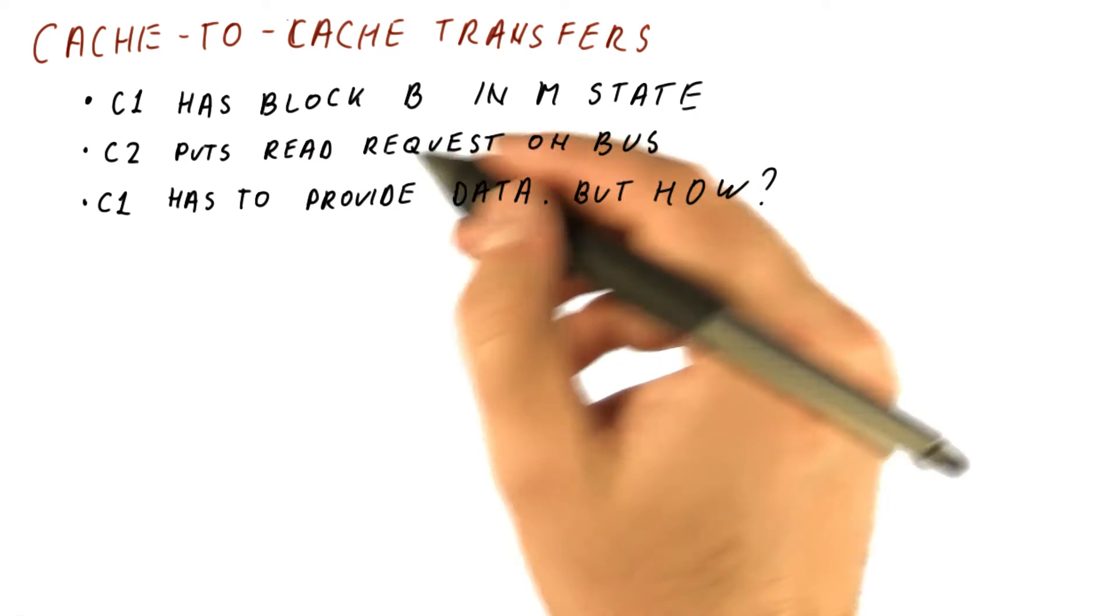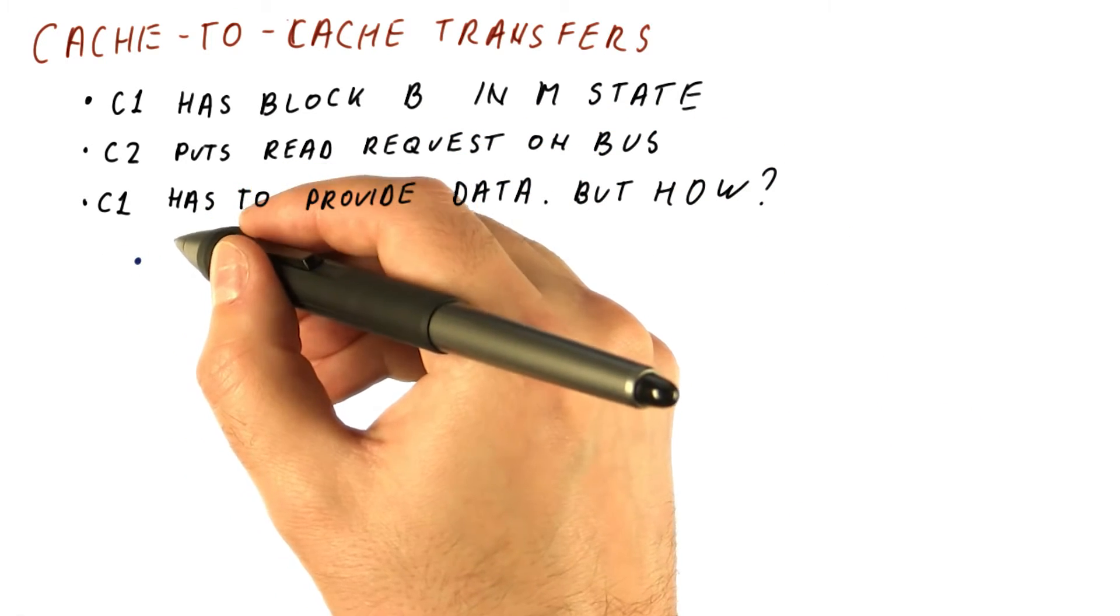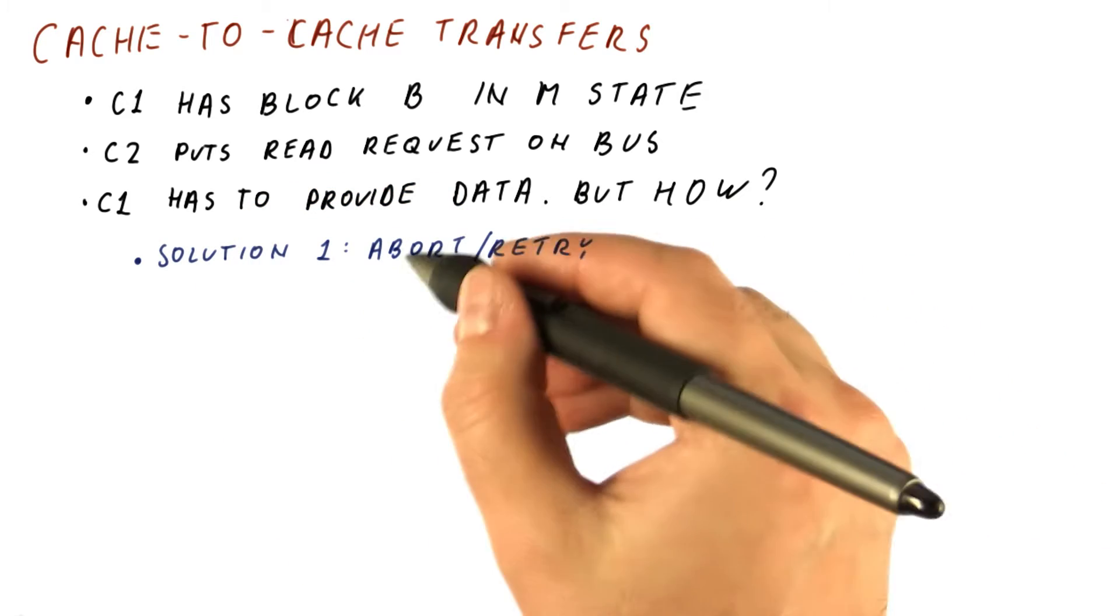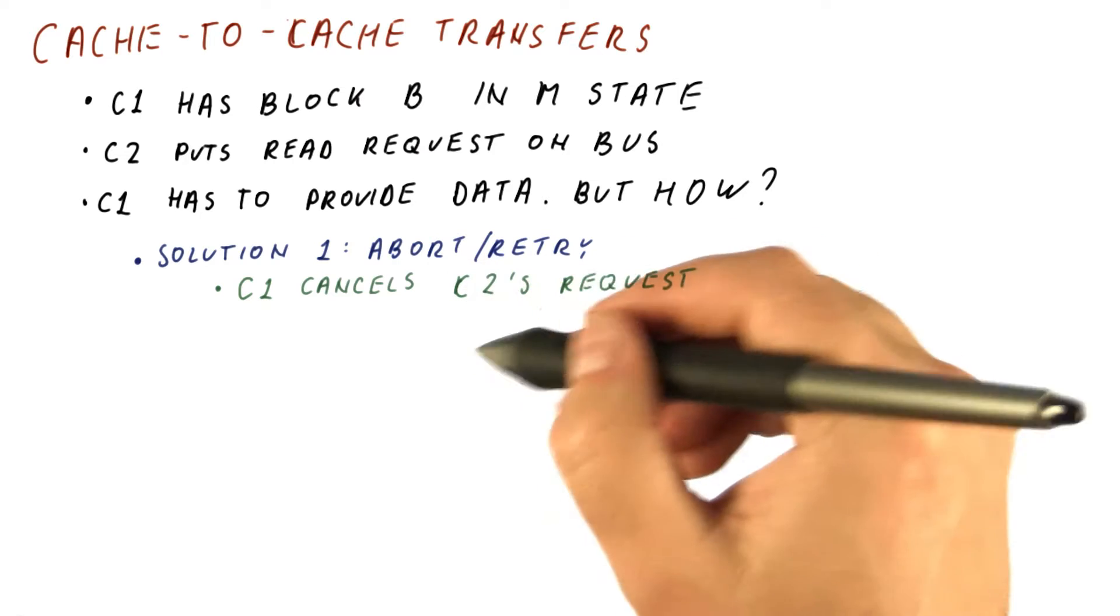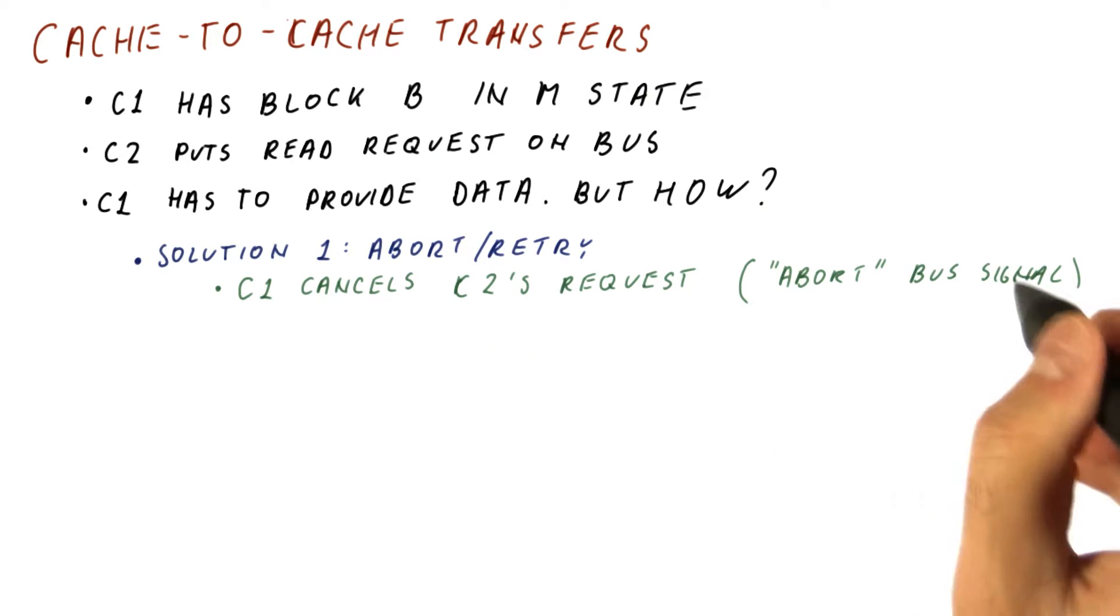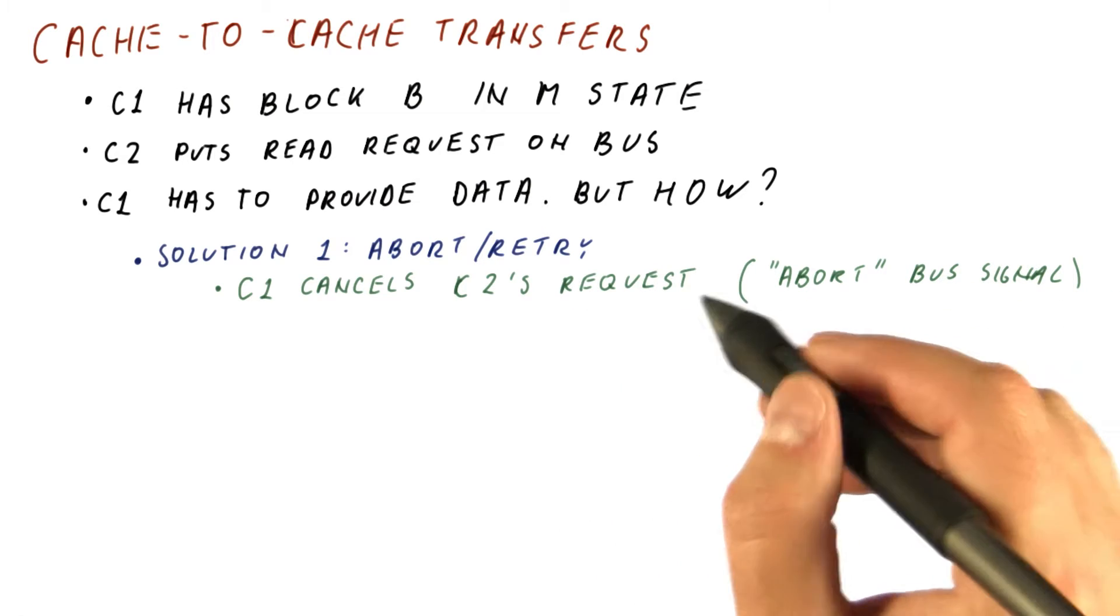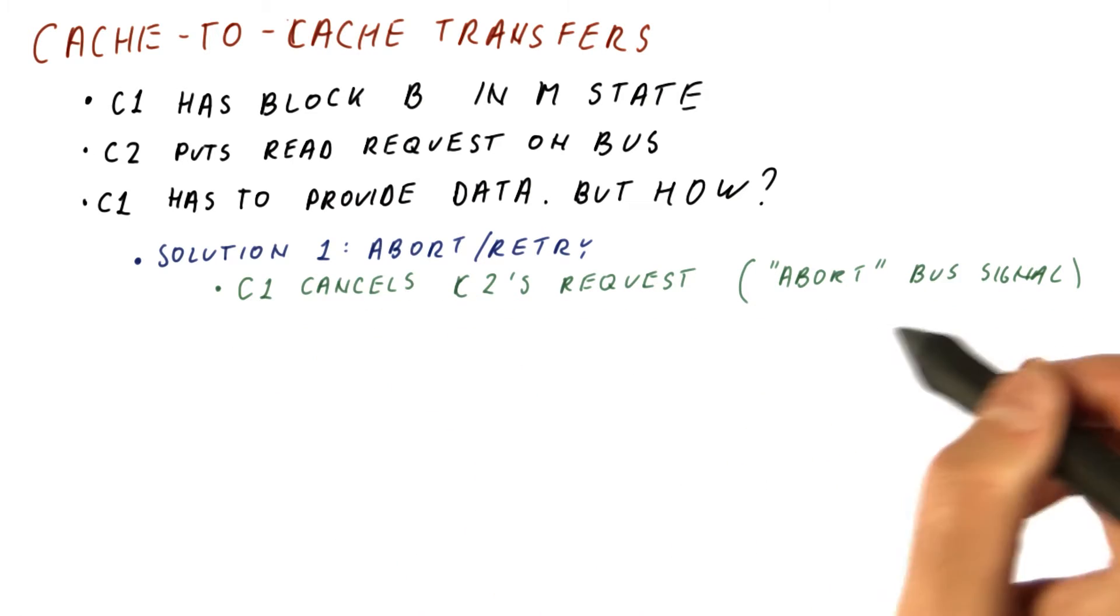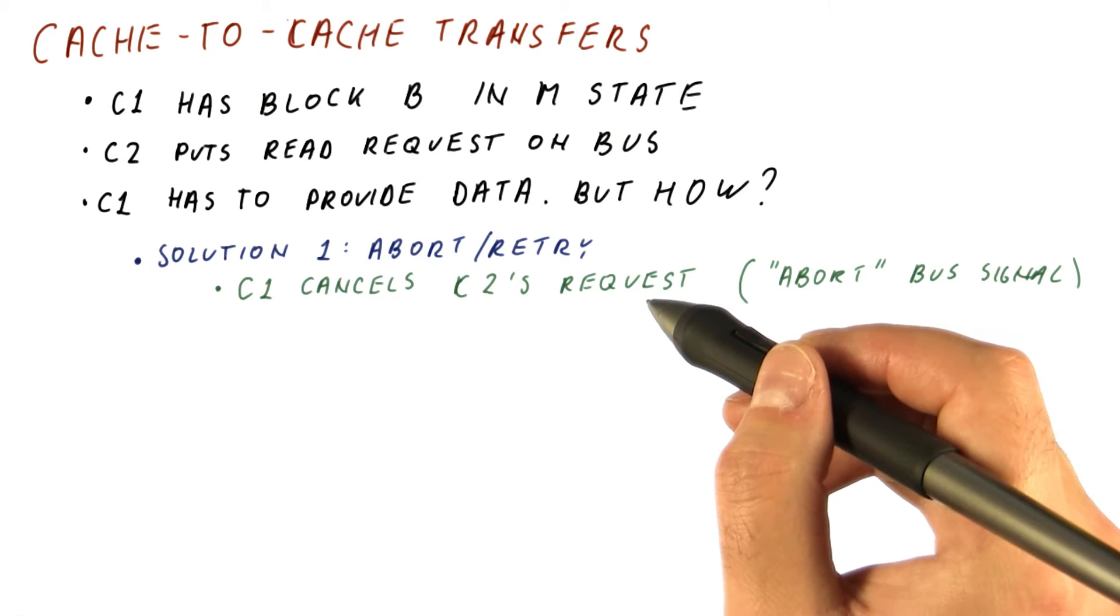And we have briefly touched on this when we were discussing the MSI protocol. There are really two solutions. The first solution is abort and retry. The idea here is that C1 somehow cancels C2's request, and for that we need some sort of an abort bus signal that when a request is placed on the bus, another core can assert the abort signal that tells the requesting core to kind of back off and try again later.